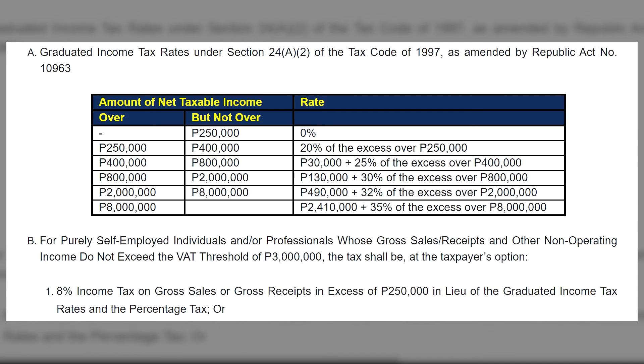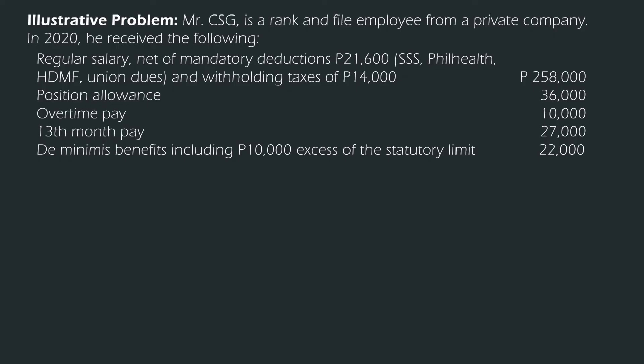The annual income tax due of a pure compensation income earner is computed only by means of the updated graduated income tax table. To understand this, let's have an illustrative problem. A rank-and-file employee from a private company received the following during the taxable year. It's worth mentioning that the annual income tax due of employees from private and government entities is computed the same way.